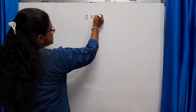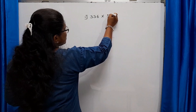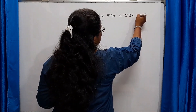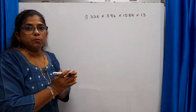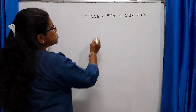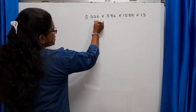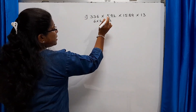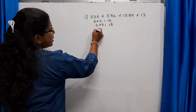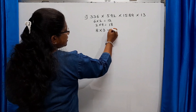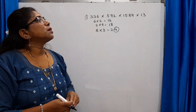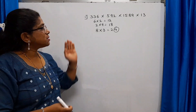First example: 336 × 592 × 1589 × 30. No need to multiply the full numbers. Just multiply the units digits: 6 × 2 = 12, take 2; 2 × 9 = 18, take 8; 8 × 3 = 24, so the answer is 4. If you multiply all these numbers, the digit in the units place of the final product will be 4.